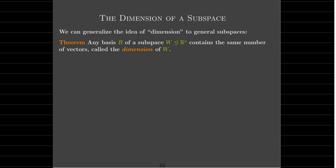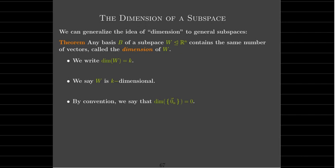Since any basis is a minimal spanning set, it must contain the same number of vectors, and we call that the dimension of the subspace. The dimension of a subspace is the number of vectors in any basis, written as DIM for short. We may say that W is k-dimensional if the dimension of W is k. As for the null subspace, by convention we say its dimension is zero — it doesn't fit exactly into our definition, so we treat it separately. We agree that the dimension of the null subspace, or zero subspace, is zero. The idea of basis and dimension will be used throughout the rest of the course.